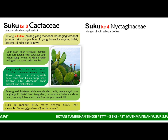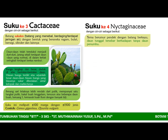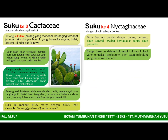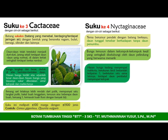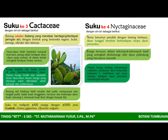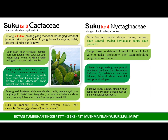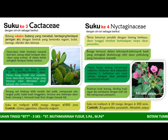Suku yang keempat adalah Nyctaginaceae dengan ciri-ciri: herba berumur pendek dengan batang berkayu, daun tunggal tersebar atau berhadapan tanpa daun penumpu. Bunga tersusun dalam bongkol kecil yang terlindungi oleh daun pelindung yang menarik. Hiasan bunga kadang menyerupai mahkota, berkelipatan lima, berlekatan satu sama lainnya. Terdapat daun kelopak yang menyerupai kelopak. Buahnya buah kurung, dinding buah rapat dan menyatu dengan biji. Biji mempunyai perisperm. Contoh tanaman dari suku Nyctaginaceae yaitu Mirabilis jalapa.